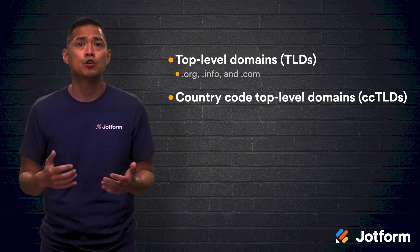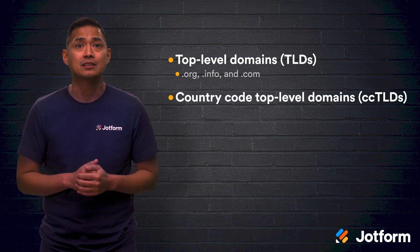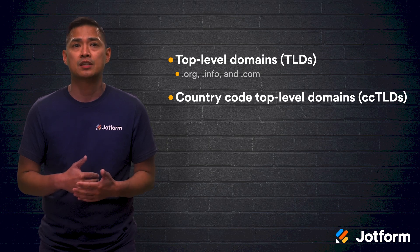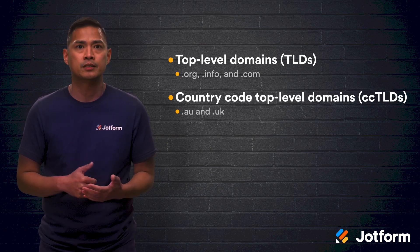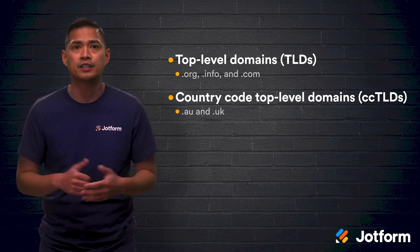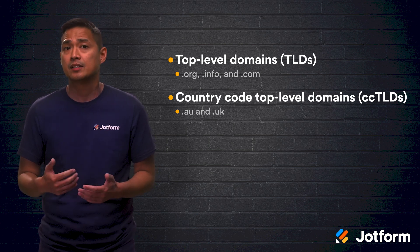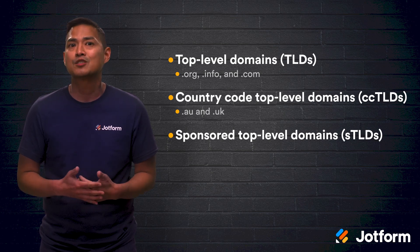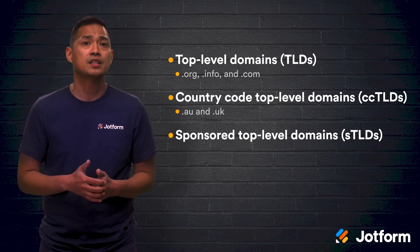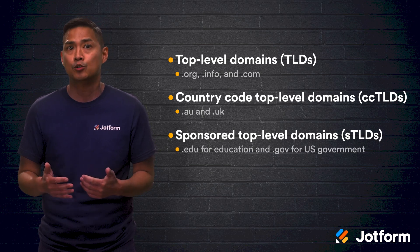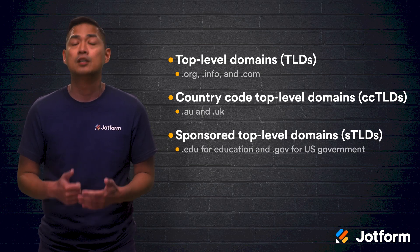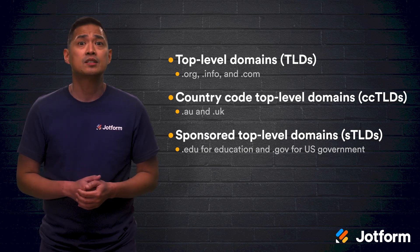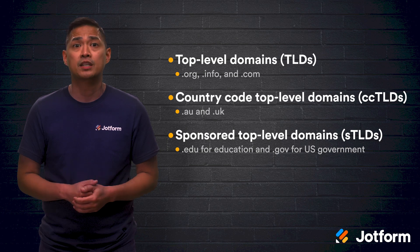Country code top-level domains, or CCTLDs, are country-specific and therefore end with a country code extension, like .au for Australia, or .uk for the United Kingdom. And lastly, sponsored top-level domains, or STLDs, are sponsored by a community or organization, such as .edu for education organizations, and .gov for the U.S. government. Generally, if you're just starting out, stick with .com, as it's the best-known domain extension.